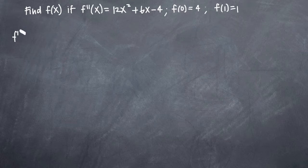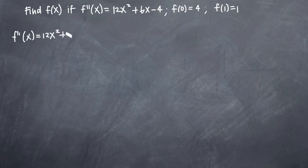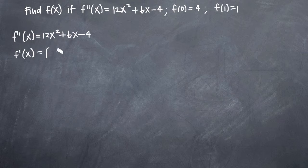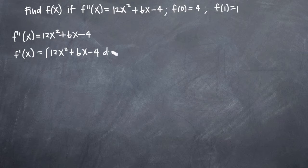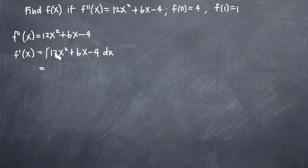So let's start with the second derivative, f double prime of x, and say that that is equal to 12x squared plus 6x minus 4. Now to find f prime of x, the first derivative, we need to take the integral of f double prime of x, which we know to be 12x squared plus 6x minus 4, and as with any integral, we need that dx notation there. This is a simple polynomial integral — we're going to use the power rule.